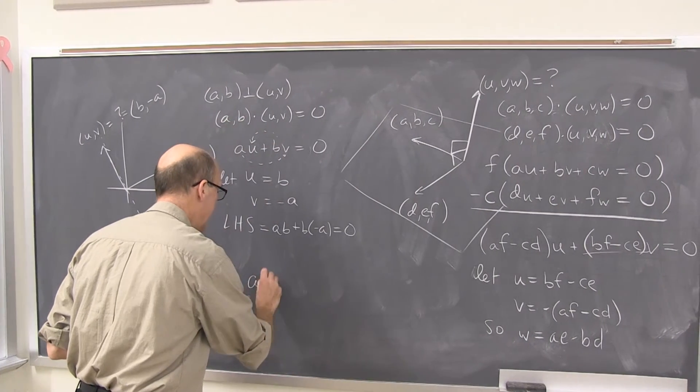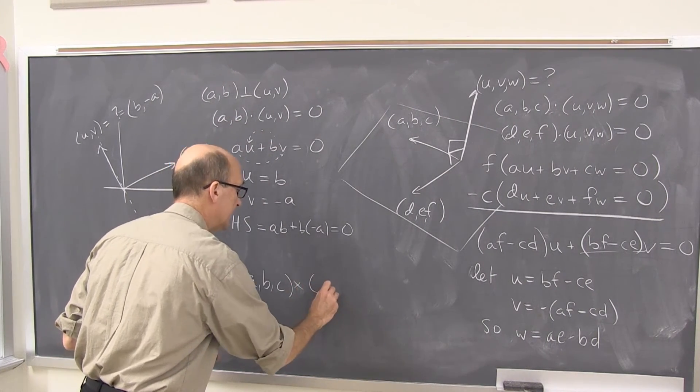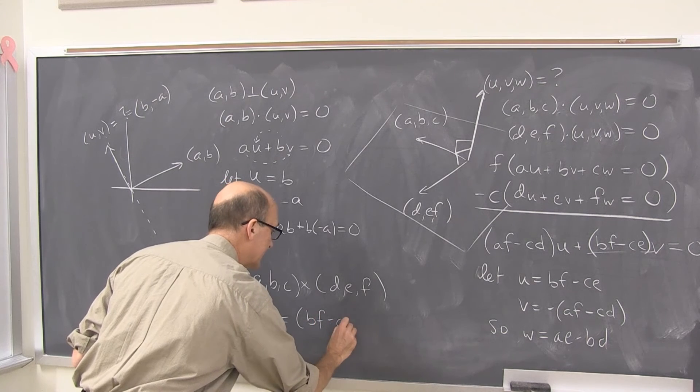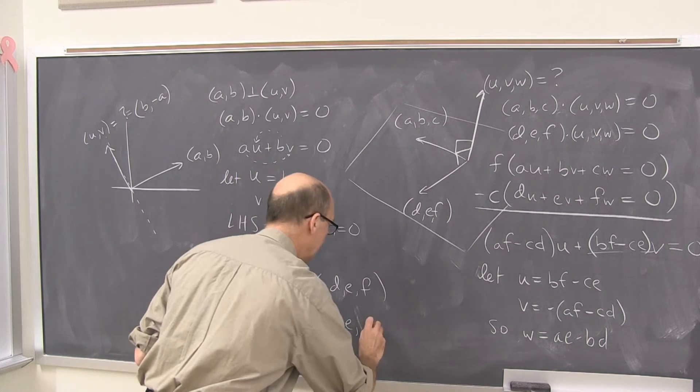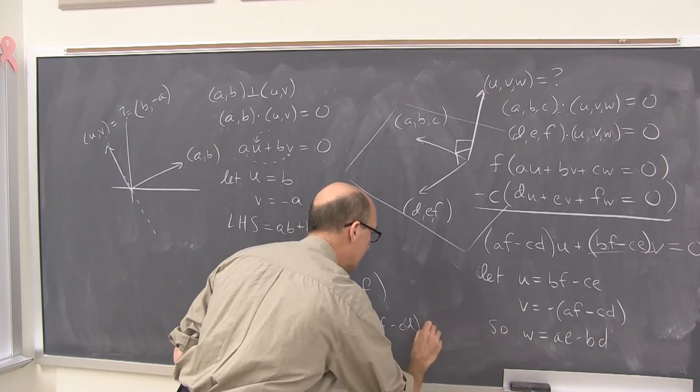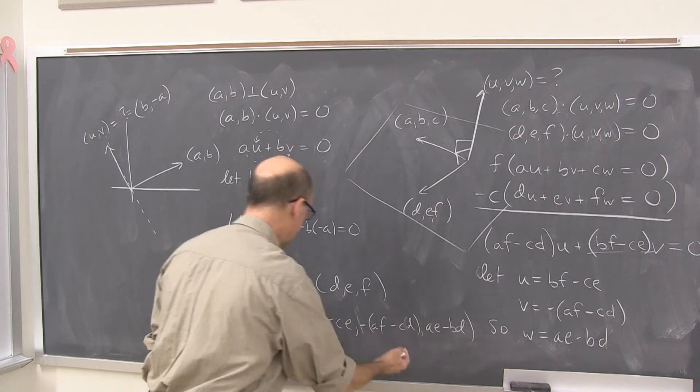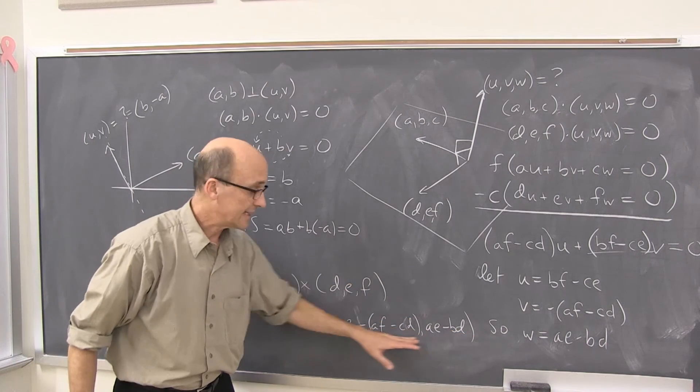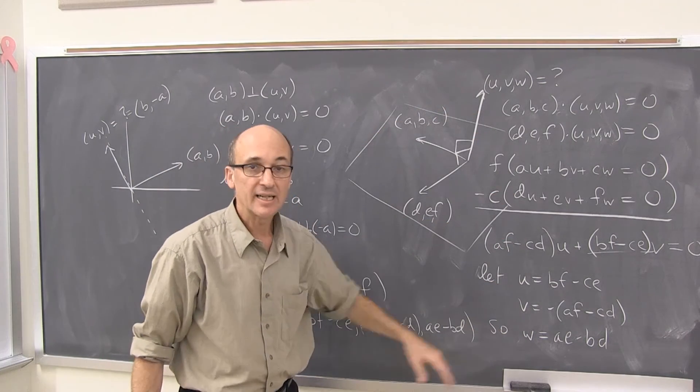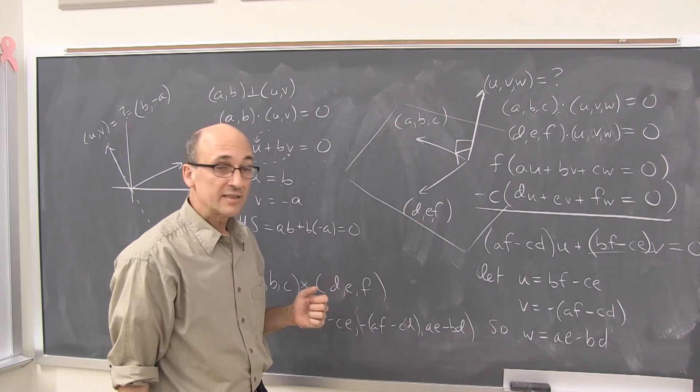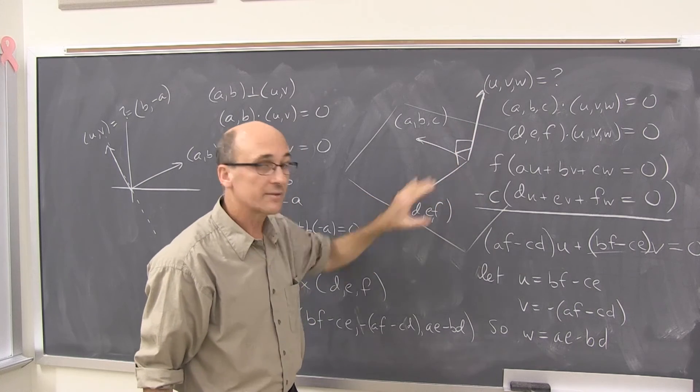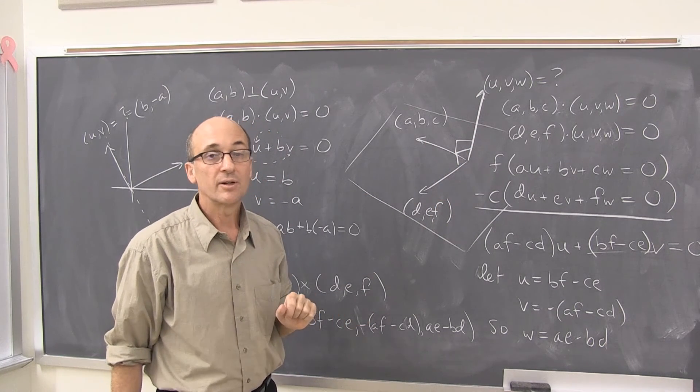We write this: (a, b, c) cross (d, e, f) equals this expression: (bf - ce, -(af - cd), ae - bd). That's the cross product. Now it's a messy looking thing. It's got a lot of letters in it. It's kind of long. But it's very, very simple. We got it just from taking dot products and solving, using the most convenient solution we could find. This leads to a nice simple expression for a vector that gives a normal direction to a plane. That's the solution to our practical problem.